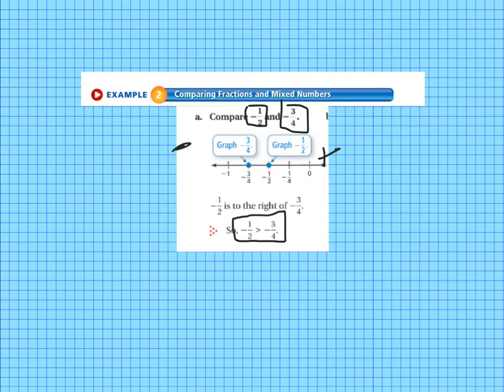So on the other side of the 0, on the positive side, positive 1 half is less than positive 3 fourths. So when we put those negative signs in, it flips that sign. So be very careful with those. And it might be a good idea to remember to graph them so that you can see where everything is.